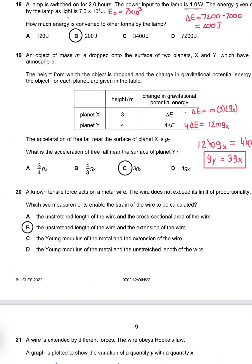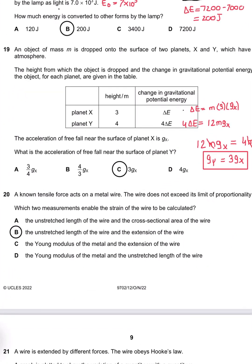Question 20: Which statements regarding the strain of the wire, which two measurements enable the strain to be calculated? The unstretched length and extension of the wire, because it is extension over length.